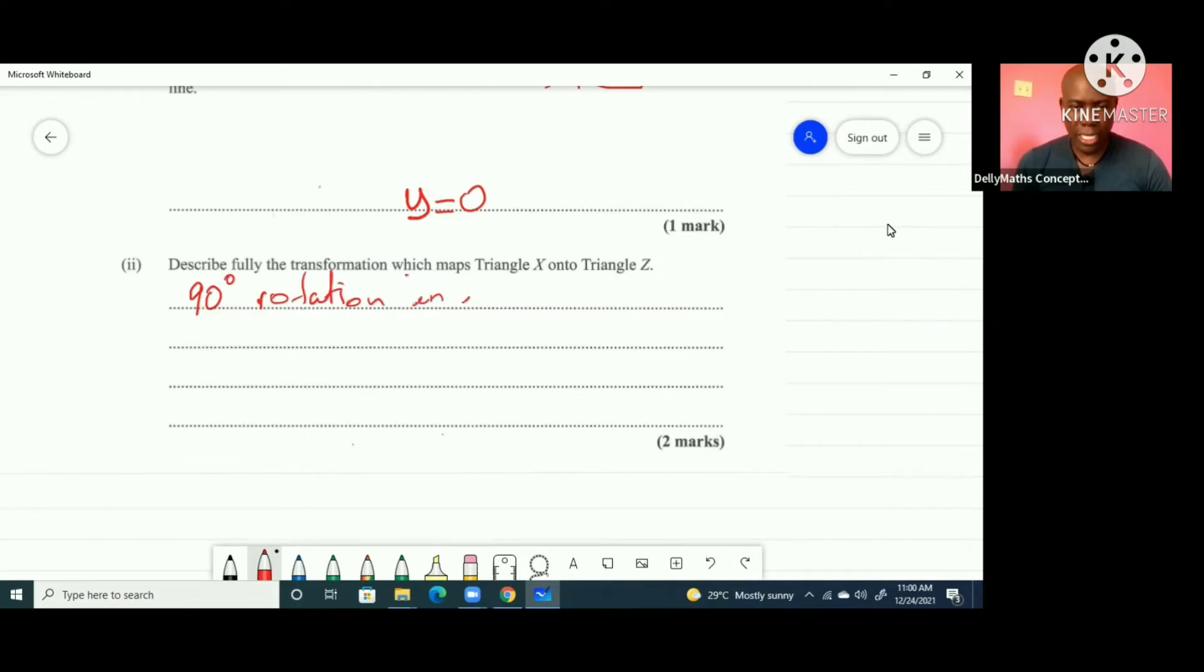So we can write: 90 degrees rotation, anti-clockwise, in an anti-clockwise direction with center 0, 0. I'll look at the two marks to navigate this.